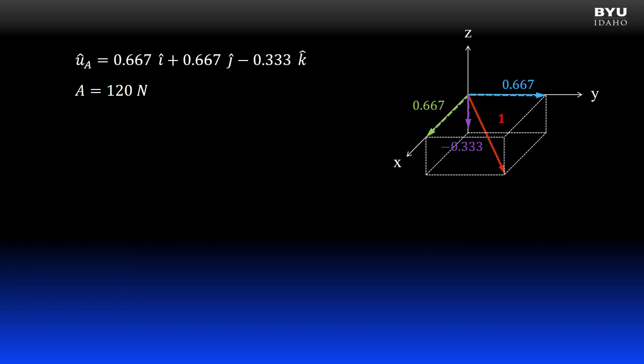If I multiply it by the scalar A equals 120 newtons, I get vector A, which acts in the same direction as the unit vector.